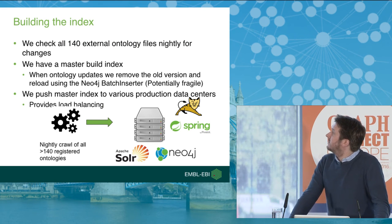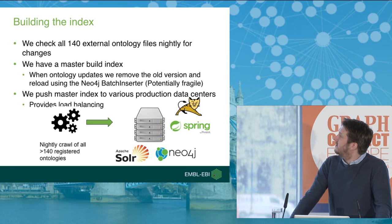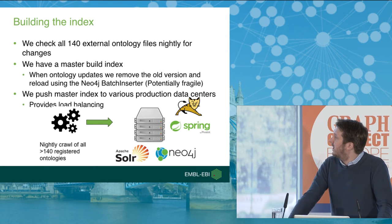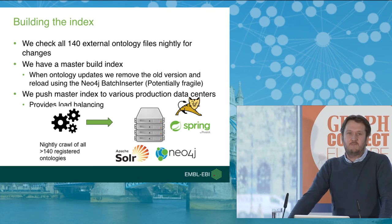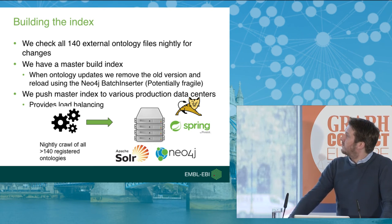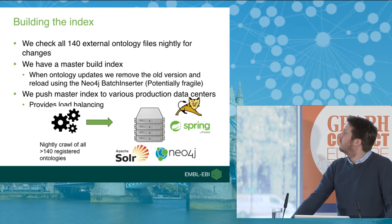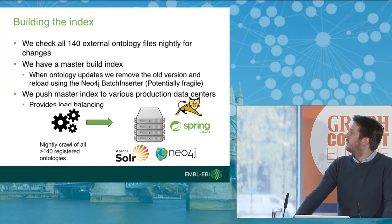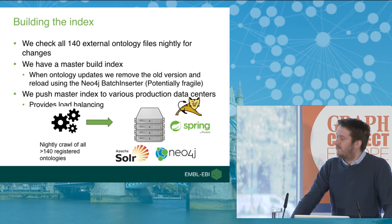How we actually build the index: we have around 140 external ontologies that we check every night. Any changes in those files, we rebuild. We have a master Neo4j index, and basically we remove any ontology that's changing and then reload using the batch inserter, which gives us really fast loading times. If you know about the batch inserter, it's not transactionally safe, so we have this potentially fragile process where we can corrupt our index. But we can build the whole index in less than four hours for all those ontologies, so it's something we can deal with nightly. Once we've built the index offline, we push it out to various data centers and load balance this, giving us quite a scalable platform for our APIs.